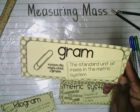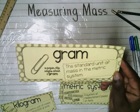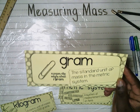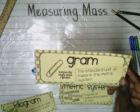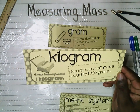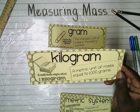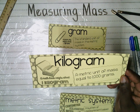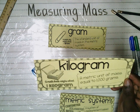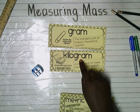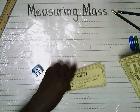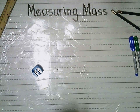What we're going to look at today: first, gram. A gram is the standard unit of mass in the metric system — it's the smallest. A paperclip weighs about one gram. And then the next one is kilogram. A kilogram is a metric unit of mass equal to 1,000 grams. A thick math textbook weighs about a kilogram. So one kilogram equals 1,000 grams, or 1,000 paper clips.